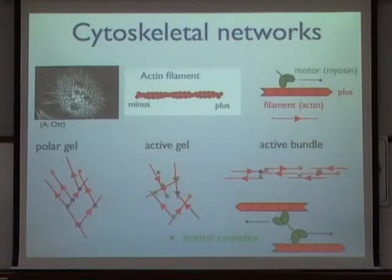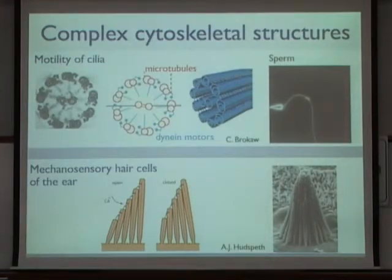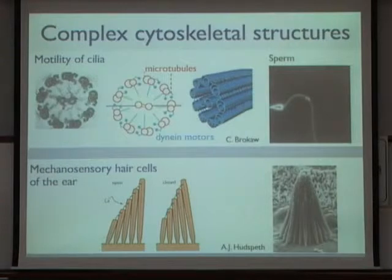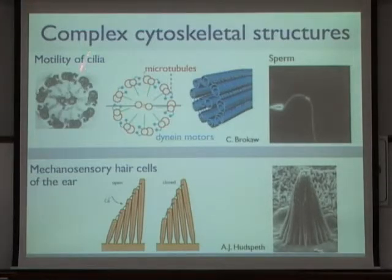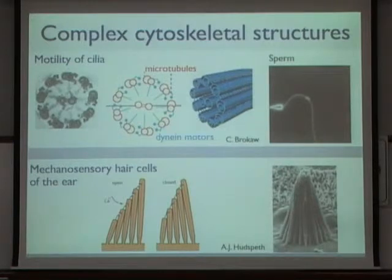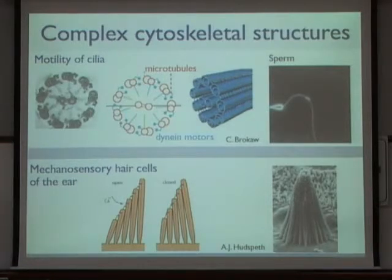Cytoskeletal filaments also form much more complex and highly organized structures. The first example is the flagellum that drives sperm motility — this structure is based on microtubules, and in cross-section one can see pairs of microtubule doublets arranged very regularly around a cylindrical configuration. Dynein molecular motors inside generate forces and stresses in this cylindrical structure that give rise to the wave-like coordinated movements shown on the first slide.